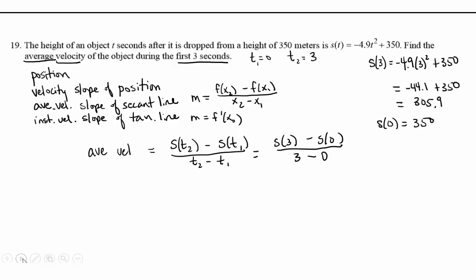What you would have to do is plug in our time one and time two, zero and three. So we plug in three to the position function and find out it's at a height of 305.9 meters. We plug in zero; that's easy, it comes out to be 350 meters.